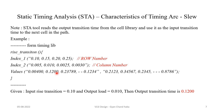This is very much clear on what slew is and how the STA tool uses slew values to calculate the transition time. This concludes the third characteristic of a timing arc, which is slew. If you have any doubts, please write them in the comment section. If you like this video, please hit the like button, subscribe to the channel, and enable notifications. Thank you very much.